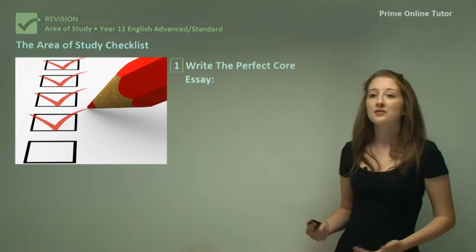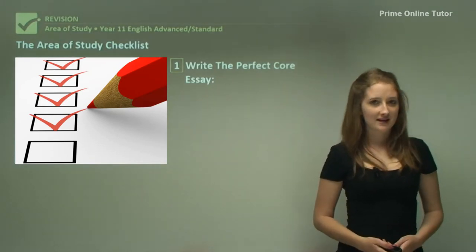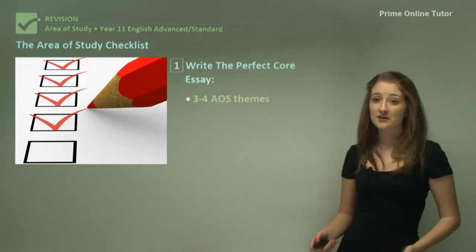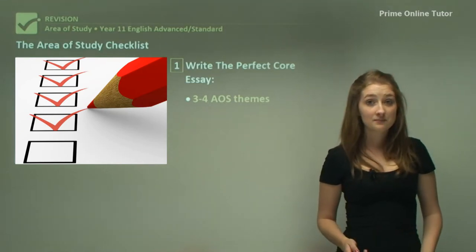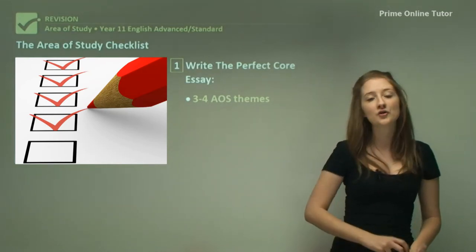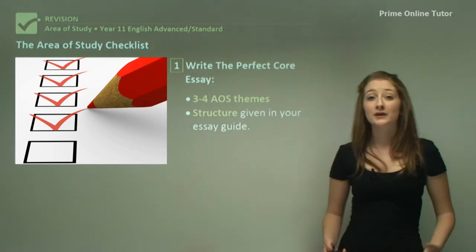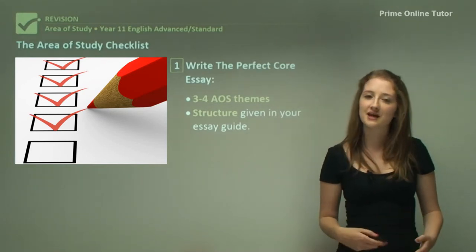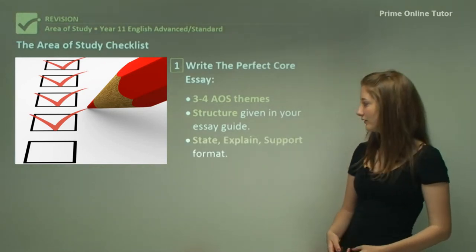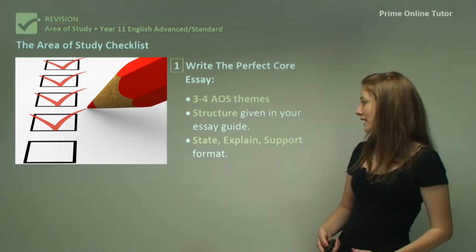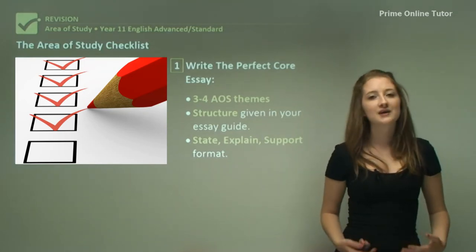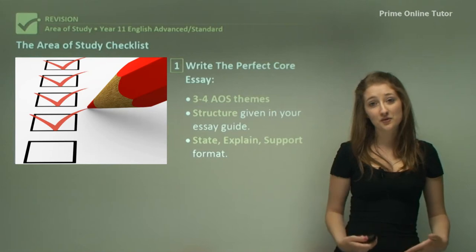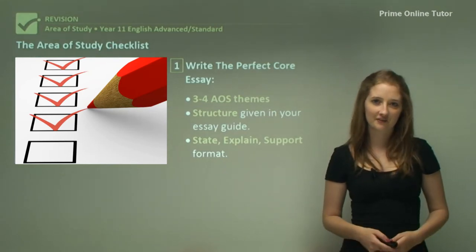We begin with number one: the way in which you write the perfect thematic essay. This will include three to four area of study themes, which are sub-levels of your overall theme. It will include the structure given to you in the essay guide, which we practise through alternating your set text and your related materials. It also includes the state, explain and support format, which ensures that you not only include examples of language techniques but back this up with quotes and then go on to explain the effect of this on your audience.